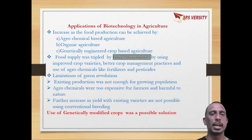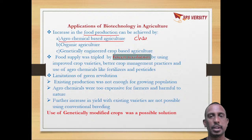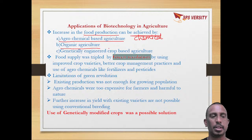When we come to applications of biotechnology in agriculture, the basic purpose is to increase food production. This may be done through agrochemical-based agriculture — using chemical pesticides and chemical fertilizers — organic agriculture without using any chemicals, or genetically engineered crop-based agriculture, that is through biotechnology.